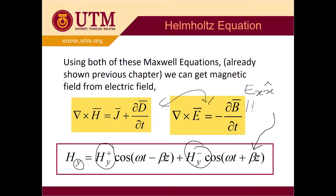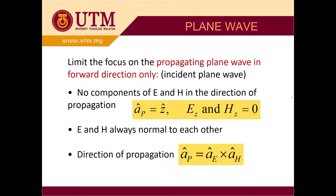We set H to have only a y component, propagating only in the y direction, and both E and H propagate in the z direction. For our analysis, we limit focus to the forward propagating wave only, ignoring the backward wave. Another condition is that there is no component of E and H in the direction of propagation, meaning no z-component for either E or H.